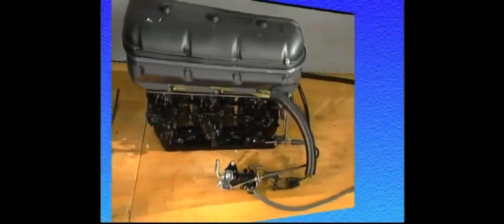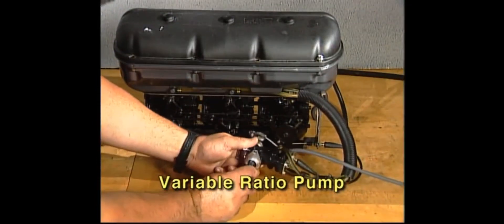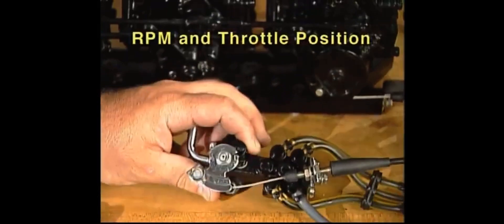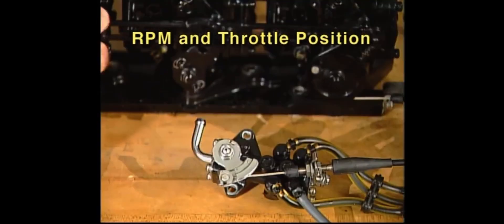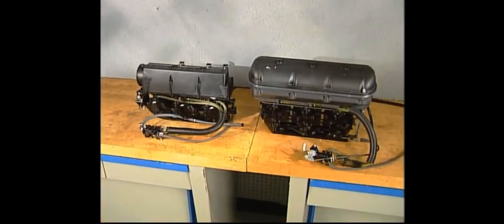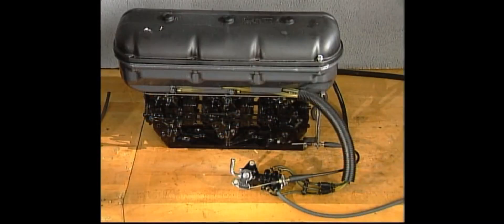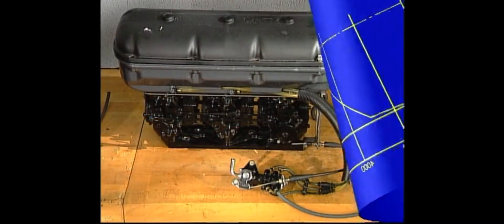The other type is the variable ratio pump. This pump bases its output on RPM and throttle position. Although both types work very well, the variable type pump is somewhat more efficient than the constant type.